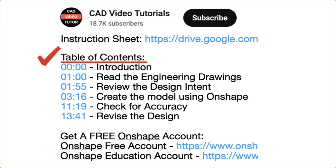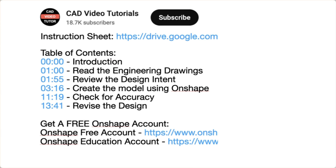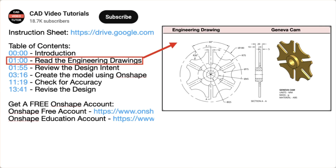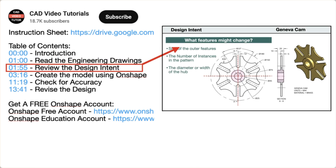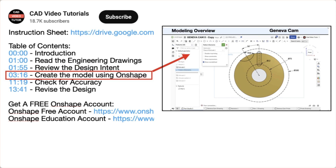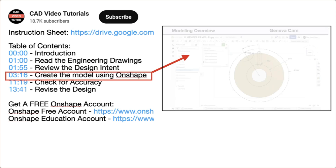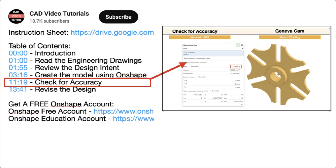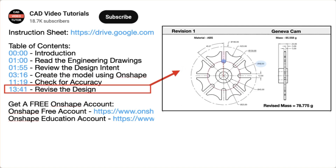The video instruction is organized into five segments. In segment one, you will read the engineering drawings. Segment two will establish the design intent. In segment three, you will create the part model using Onshape. Next, you will check the accuracy of your model by checking its mass properties. Last, you will check the design intent by making changes to the model to see if it will update correctly.